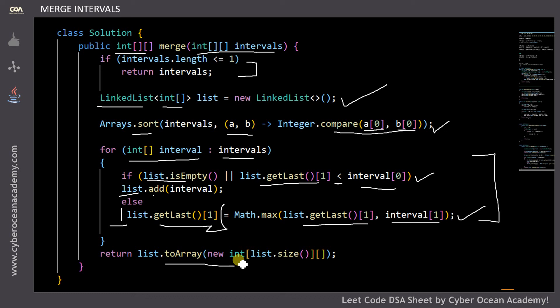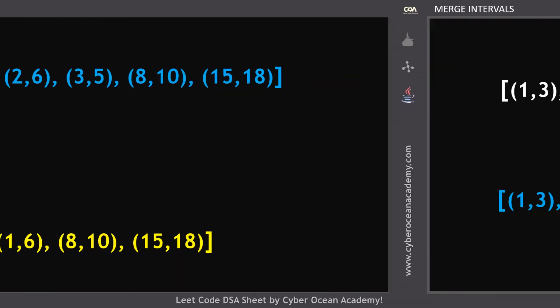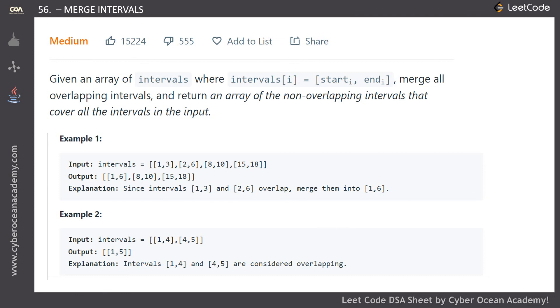The time complexity is O(n log n) due to sorting, plus O(n) for iterating each interval, giving overall O(n log n). The logic itself is simple, but using Java features like collection framework, 2D arrays, and linked list of arrays can make it look hard. If you are familiar with these things, you can easily solve this problem. Thanks for watching and please subscribe the channel.